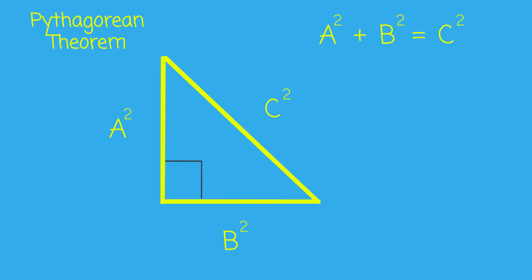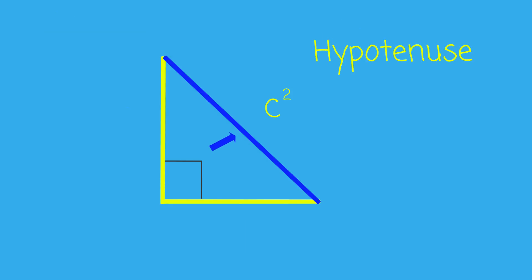The A and B represent the two sides that make the right angle. And the C will always represent the hypotenuse, or the side directly opposite of the right angle.